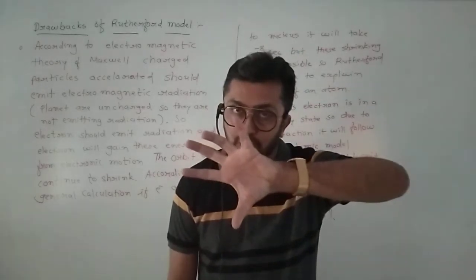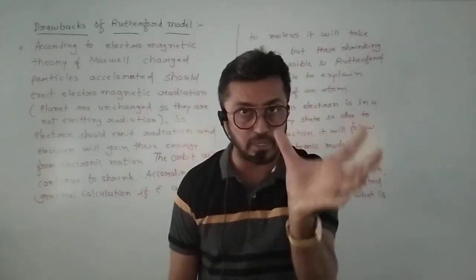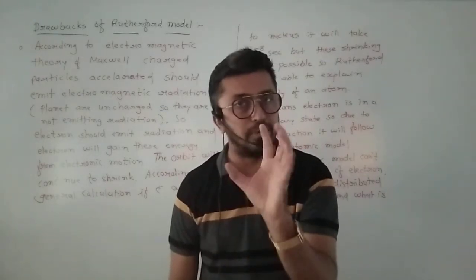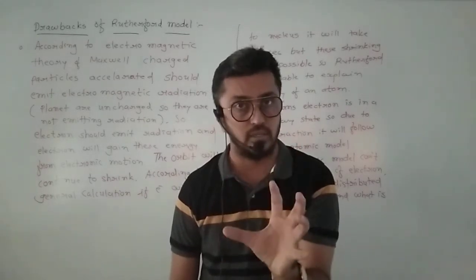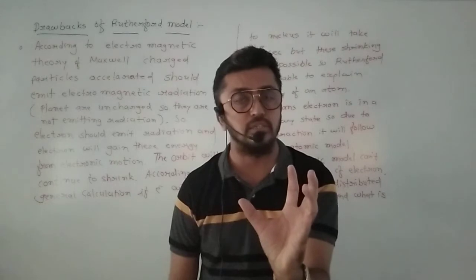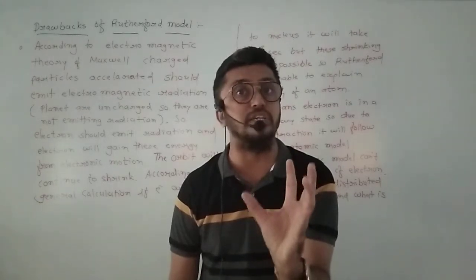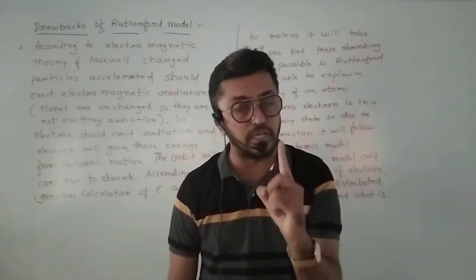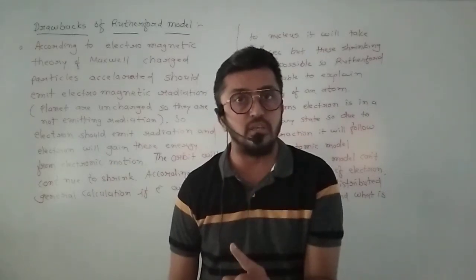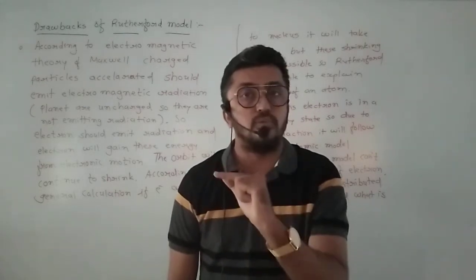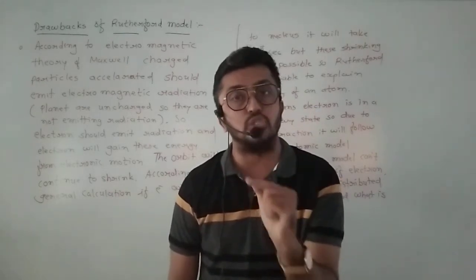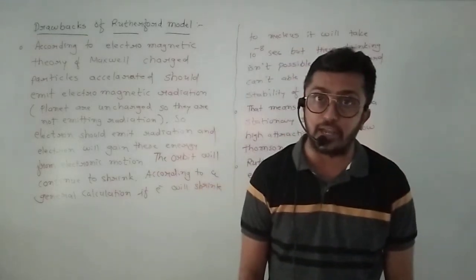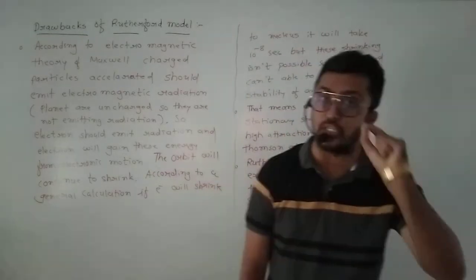As Maxwell explained, in Rutherford's model, if the electron is in motion, it should emit electromagnetic radiation. In the solar system analogy, planets do not emit radiation because planets are uncharged. So planets do not emit any type of radiation. But the electron should emit electromagnetic radiation.